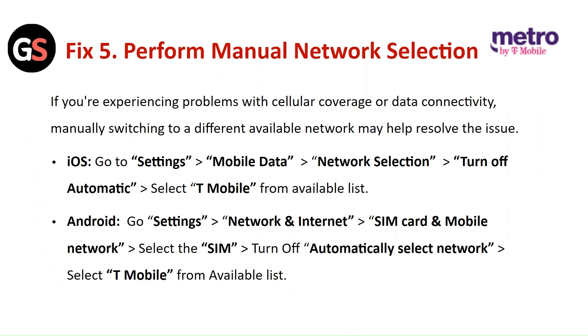For iOS, go to Settings, then Cellular, then Network Selection, turn off Automatic, and select T-Mobile from the available list.